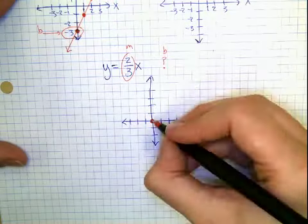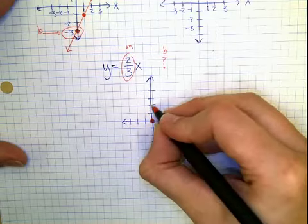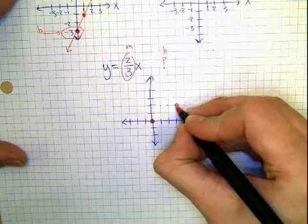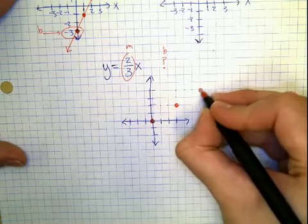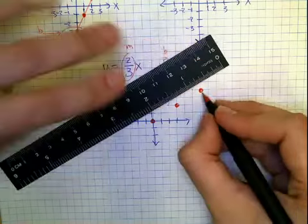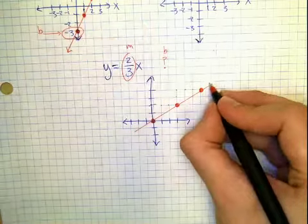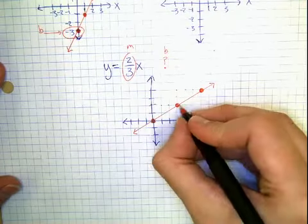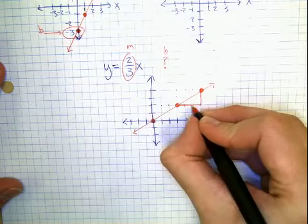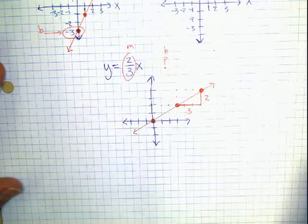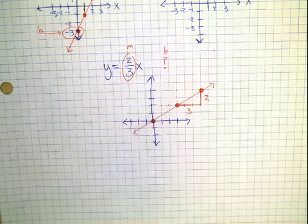Two-thirds is our rise and run. We're going to go up two, over three. Up two, over three. To make our line, I'll line these points up, connect them with my ruler, draw an arrow. I can make a growth triangle. It's going to show that it went over three squares and up two. And that is how you graph a line quickly without needing a table.